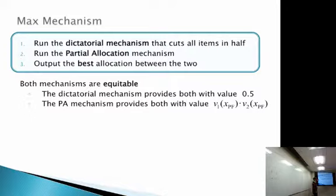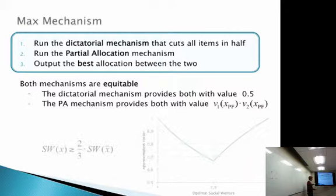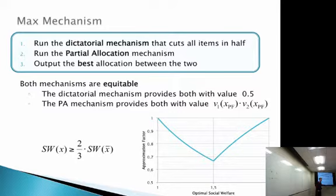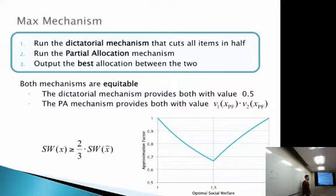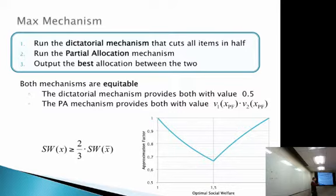The dictatorial mechanism performs well when players have the same interests but poorly for disjoint interests (you give them half of things they don't want). The partial allocation mechanism is the opposite. By taking the max of the two — which is well-defined since both are equitable — each mechanism covers the other's weak case, and together they achieve a two-thirds approximation of the optimal social welfare, beating the previous best known half.